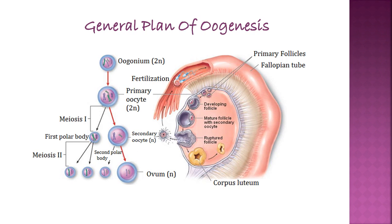There are oogonia which are diploid egg mother cells. When this oogonium undergoes growth it forms the primary oocyte, which is also a diploid cell. This primary oocyte undergoes meiosis first, which is a reductional division. After meiosis first, the daughter cells will have half the number of chromosomes. The diploid number of chromosomes in humans is 46, so after meiosis first the daughter cells will now have 23 chromosomes each.